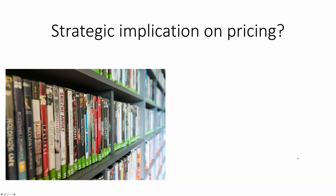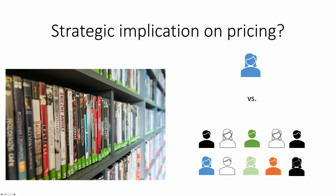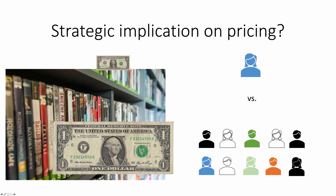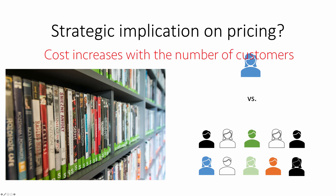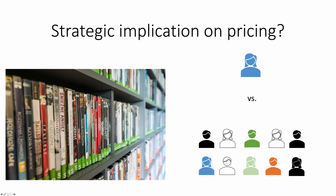Let's examine the DVD rental scenario. Netflix mailed DVDs to customers, customers watched and returned them. If we compare having one customer versus hundreds of customers, how does the cost differ — does it expand proportionally or stay the same? The cost has to change more or less proportionally, because in the DVD rental business, Netflix's main cost is the holding cost of DVDs. With more customers, more DVDs are in use at any time and more are in transit. So the number of DVDs held must increase proportionally with the number of customers. Netflix was mainly a variable cost-driven business whose cost structure expanded proportionally with its customer base.